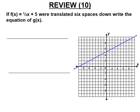We also did translation of functions vertically. If one-half x plus five were translated six spaces down, we subtract six from the y-intercept: five minus six equals negative one. So g of x equals one-half x minus one. The slope stays the same at one-half, and the new line is parallel to the old one.